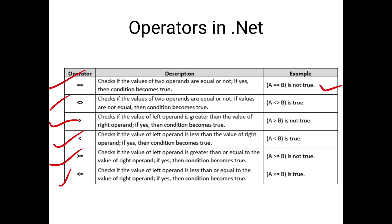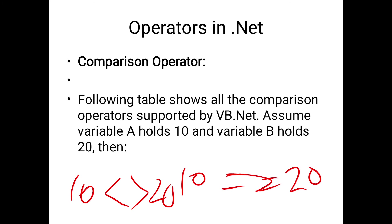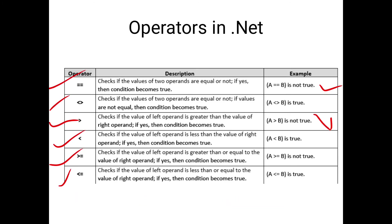The next is greater than — it checks if the value of the left operand is greater than the value of the right operand. If yes, the condition becomes true. Here we check whether 10 is greater than 20 — the condition is not true. Then A less than B checks if the value of the left operand is less than the right operand; A less than B is true. Now greater than or equal to checks if the value of the left operand is greater than or equal to B. 10 is greater than or equal to 20 — the condition is not true.